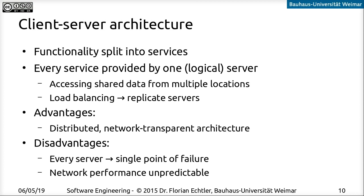Another architectural pattern is the client-server architecture. The fundamental idea is that we split all functionality into services, and for each of these services we have a server. This doesn't have to correspond one-to-one to a physical server mounted in a rack — we can also have logical servers. The two big advantages are that we can access data basically from anywhere, and we can also easily do load balancing. If we just start up additional copies of one of these services, then we can handle a lot more connections without really having to change anything in our architecture. The advantage is this is distributed per se, and it's network transparent, so it's easy to put into different data centers.